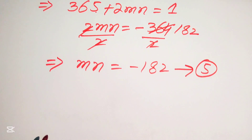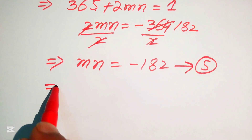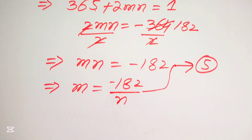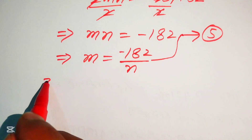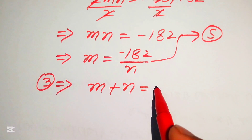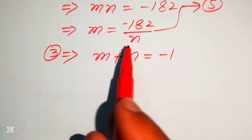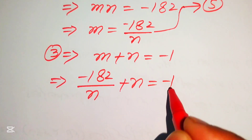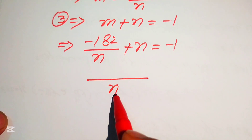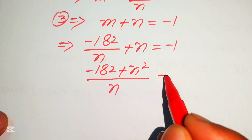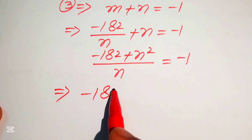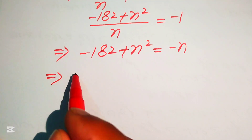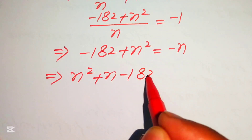From equation number 5, we express m equals minus 182 divided by n. Substituting into equation number 3, m plus n equals minus 1, we get minus 182 over n plus n equals minus 1. Multiplying through by n: minus 182 plus n squared equals minus n. Moving minus n to the left hand side gives n squared plus n minus 182 equals zero.